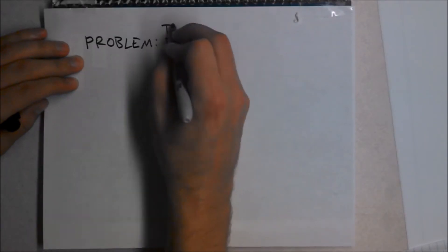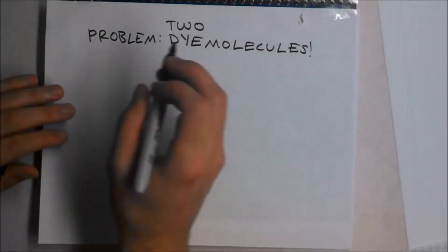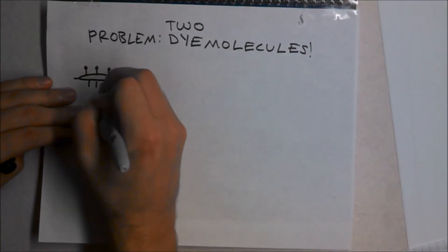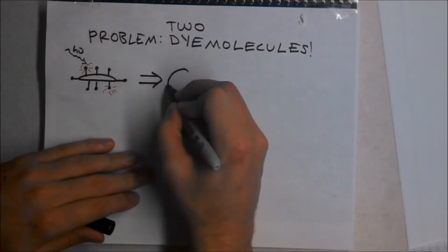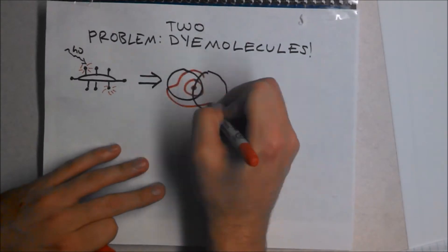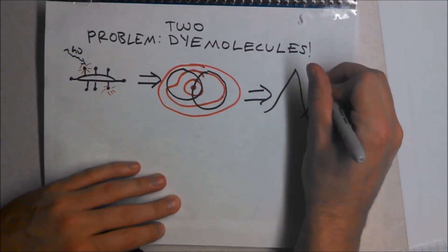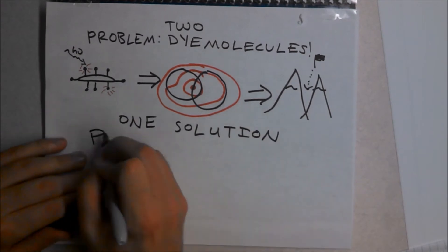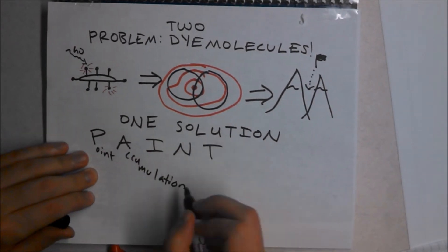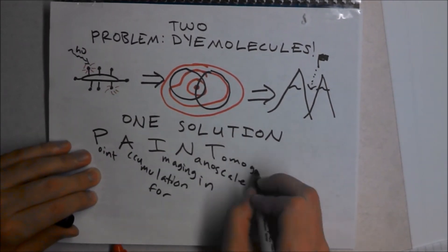A problem arises when more than one dye molecule is excited. The intensity of the fluorescence from two dye molecules causes a maxima between the two peaks, distorting the image created by finding the peak intensity. One solution to this problem is to use PAINT, or Point Accumulation for Imaging Nanoscale Topography.